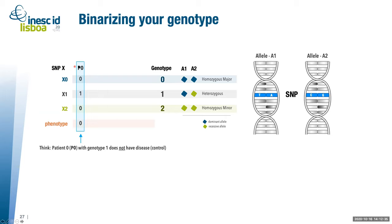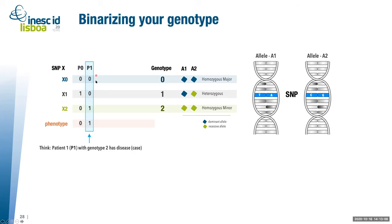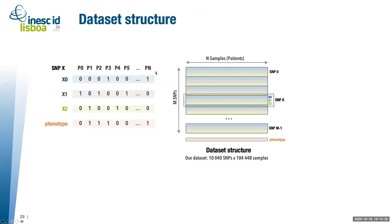For example, patient zero has genotype one for SNP X. In our dataset, we have an additional phenotype vector indicating whether a patient has the disease or not. Patient zero with genotype one has phenotype zero — meaning no disease — so we call this person a control. Patient one with genotype two has the disease. In practice, our dataset will have many patients — for example, 10 here — each with a phenotype vector and genotype information.